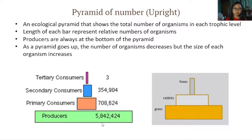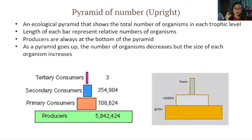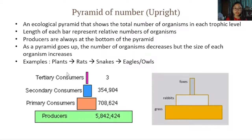Primary consumers, secondary consumers, and tertiary consumers are usually fewer in number but larger in size. An example of a food chain that produces an upright pyramid of numbers is: plants → rats → snakes → owls or eagles. This upright shape means it is wide at the bottom and narrow at the top.